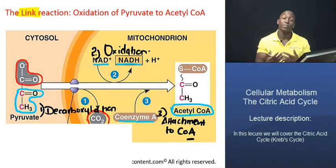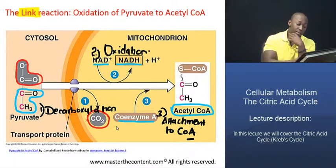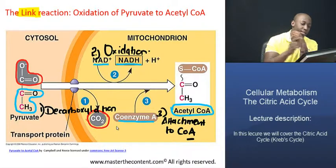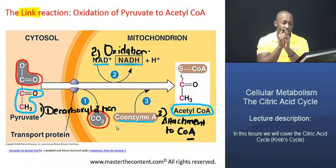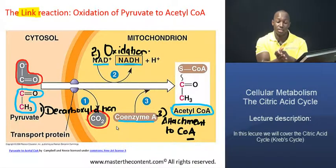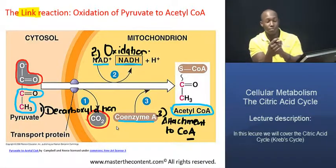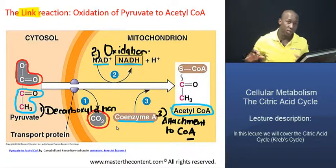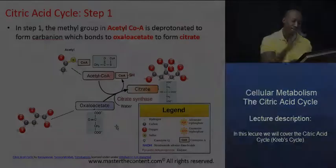We're going to move on now and delve into the key steps of the citric acid cycle. Because once acetyl coenzyme A has been formed, we're good to go — we can get started with the citric acid cycle.